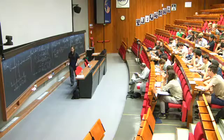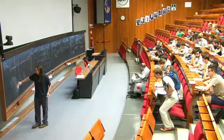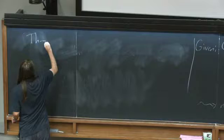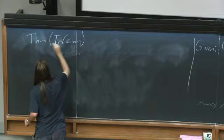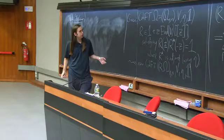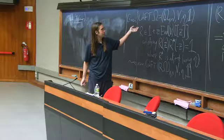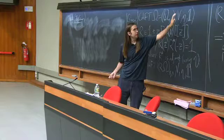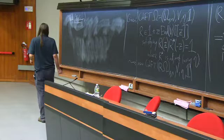Let me restate now the theorem from last time: Telemann's reconstruction conjecture — now a theorem. Any semi-simple cohomological field theory: the R-matrix action acts freely and transitively on the set of cohomological field theories with a fixed V, eta, unit, and quantum multiplication on V.